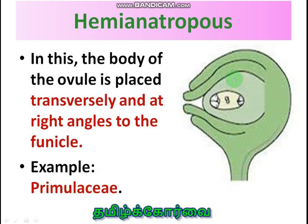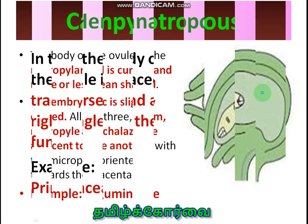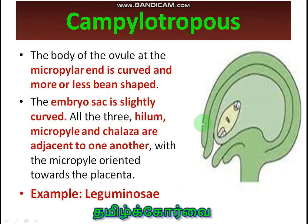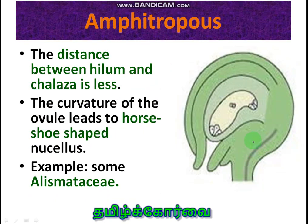Campylotropous: the ovule is totally curved — the micropylar end is curved and they are more or less bean-shaped. The embryo sac is slightly curved. Hilum, micropyle, and chalaza are adjacent to each other. Example: Leguminosae. In amphitropous, it is still more curved in such a way that the nucellus becomes horseshoe-shaped. The curvature of the ovule leads to a horseshoe-shaped nucellus, so the distance between hilum and chalaza is very less. Example: some members of the Alismataceae family.